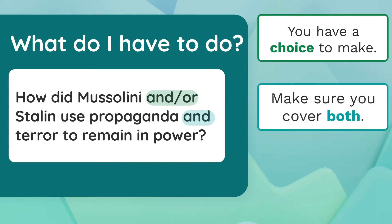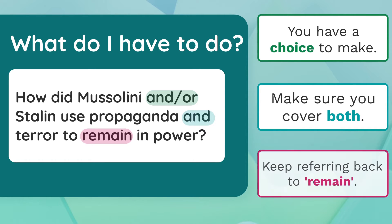Your history essay isn't just about throwing down everything you know about a topic. You have to refer to the question asked on the day. In this instance, I'd advise you to keep referring back to the word 'remain.' The common mistake is talking about everything Stalin did in relation to propaganda and terror but not making the link with how all of that allowed him to remain in power. Keep referring back to that word or something similar, and you're dealing with the question rather than just putting down everything you know.